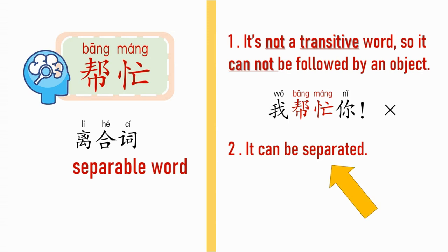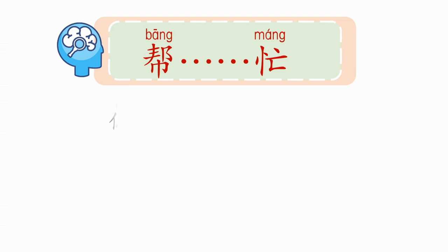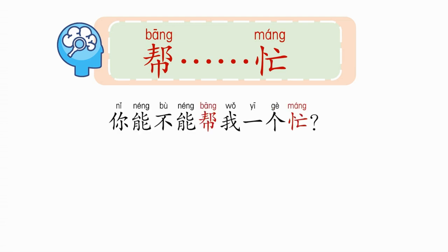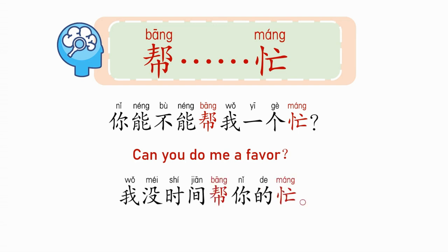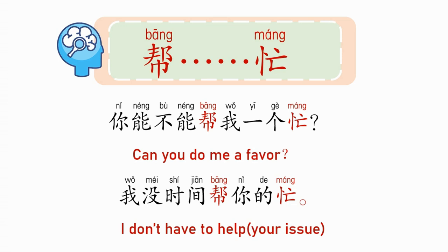Remember the second point about 帮忙 — it can be separated. In other words, you can insert other things in the middle of 帮 and 忙. 比如说,你能不能帮我一个忙 — we put 一个 in the middle. 帮 means 'help,' 忙 means 'issue or problem,' so this is like saying 'can you do me a favor?' Another sentence: 我没时间帮你的忙 — I don't have time to help with your issue. We insert 你的 (your) in the middle. So 帮忙 can be separated.